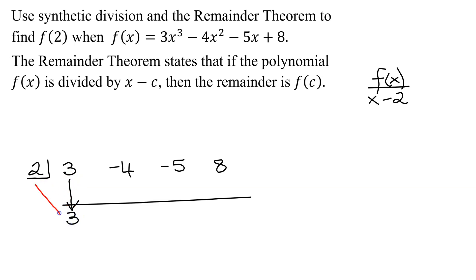Then we multiply 2 times 3 and write the answer up there. 2 times 3 is 6. Add these two numbers. -4 and 6 is positive 2.